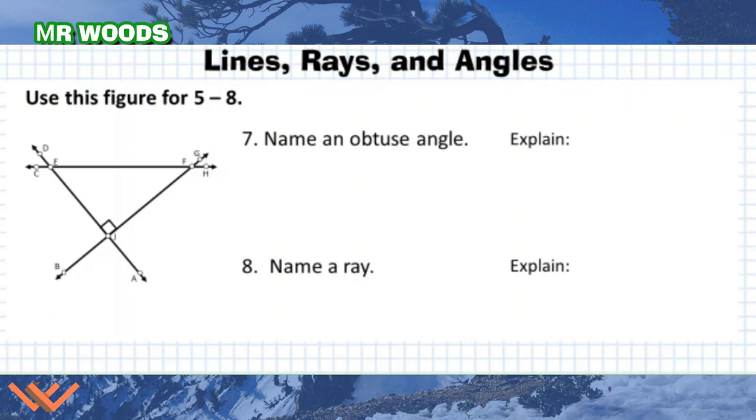We're still using the same figure for questions five through eight. We're on seven and eight here. Name an obtuse angle. If you recall, an obtuse angle is greater than 90 degrees. The easiest one I can see right off the bat is DEF. So I'm going to say angle DEF. If you look at this, DEF is absolutely greater than 90 degrees. 90 degrees, if I took it straight up from here, that would be 90. And that is greater than 90. DEF is an obtuse angle because it is greater than 90 degrees.